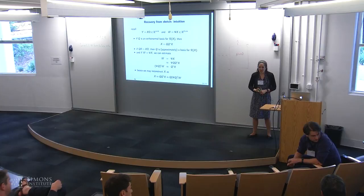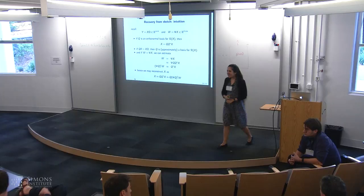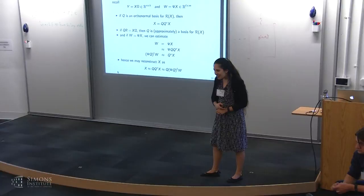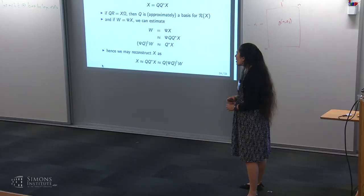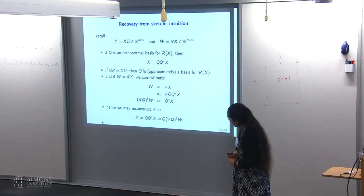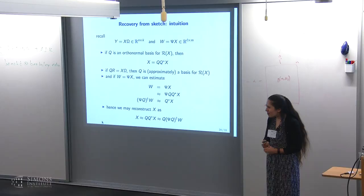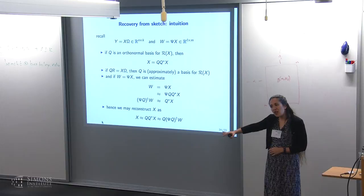Another question: if the spectrum of the matrix decays slowly, should you use power iteration to capture the range? Answer: yes, you can do better with power iteration. Depending on how quickly the singular value tail decays, you get tighter bounds. But in practice, for this application, a single pass gives a decent approximation.